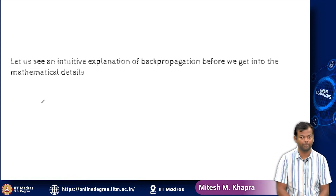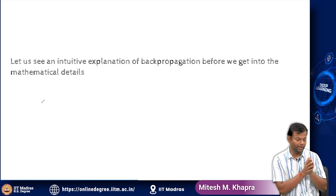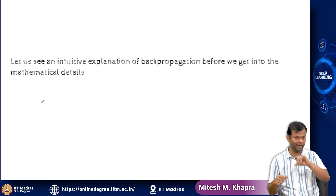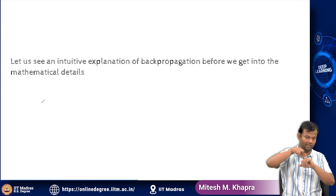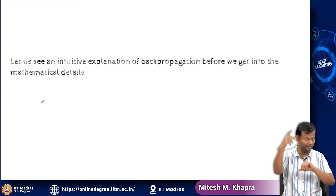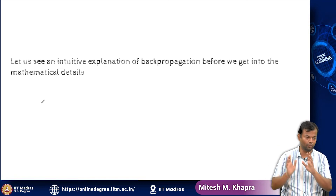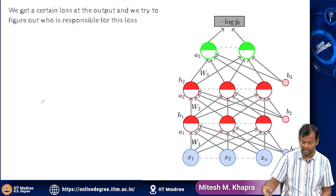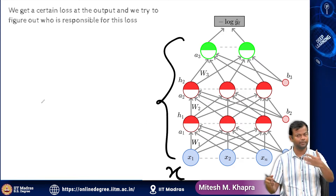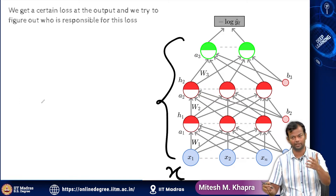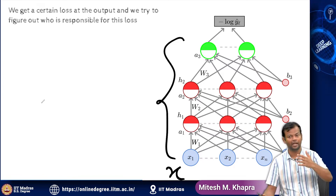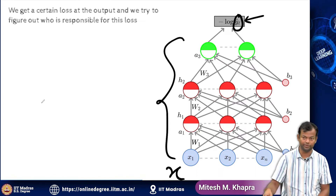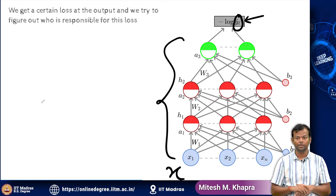Now let us see an intuitive explanation of the back propagation algorithm before we go into the mathematical details. There is a large network of many weights and I want to compute the derivative of the loss function with respect to all these weights. I took a weight which was very far away from the loss function and made a case that if you have a chain from the loss function to that weight, you could just apply the chain rule. So I gave the network an input X, it produced a certain output, I computed the loss based on that output using current values of W1, W2, W3, B1, B2, B3 — which are not the final learned values — and I got a non-zero loss. So now I am trying to find out what went wrong.